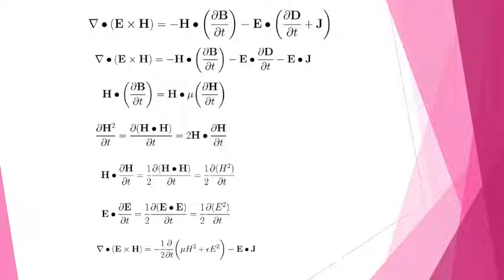By simplifying these equations, we can get H dB by dT is equal to H into mu dH by dT. This can be written as E dot dE by dT equal to half into d E square by dT.